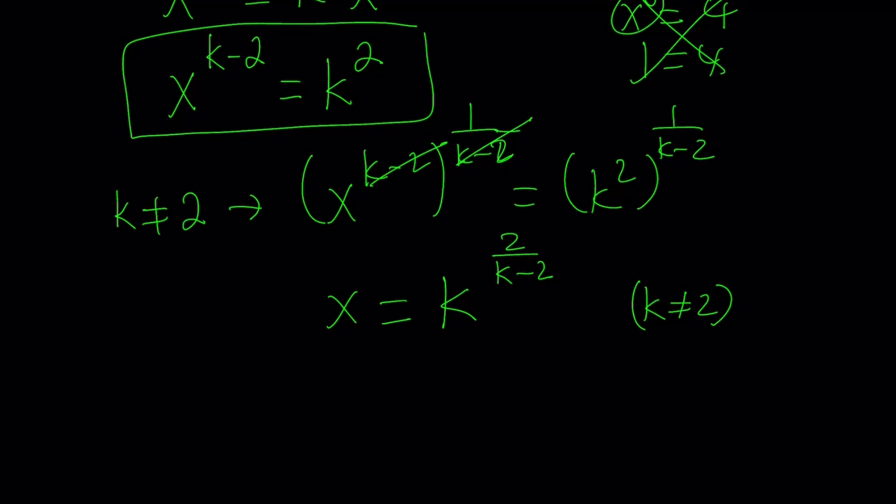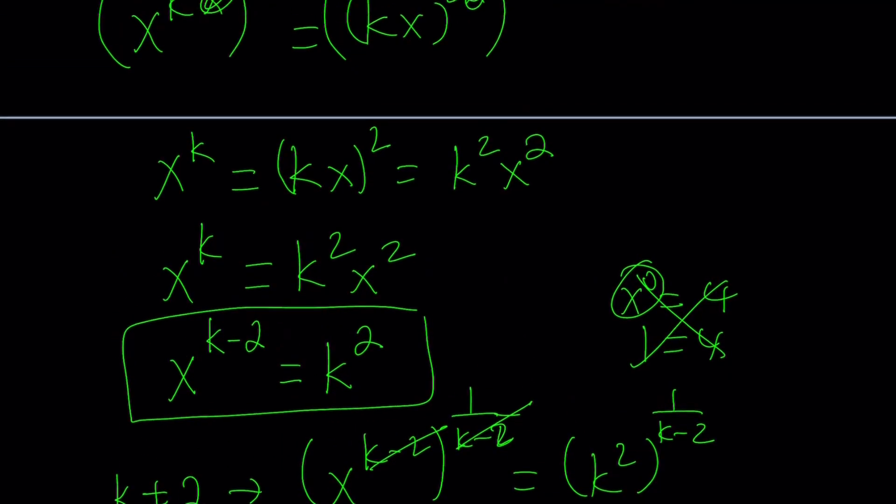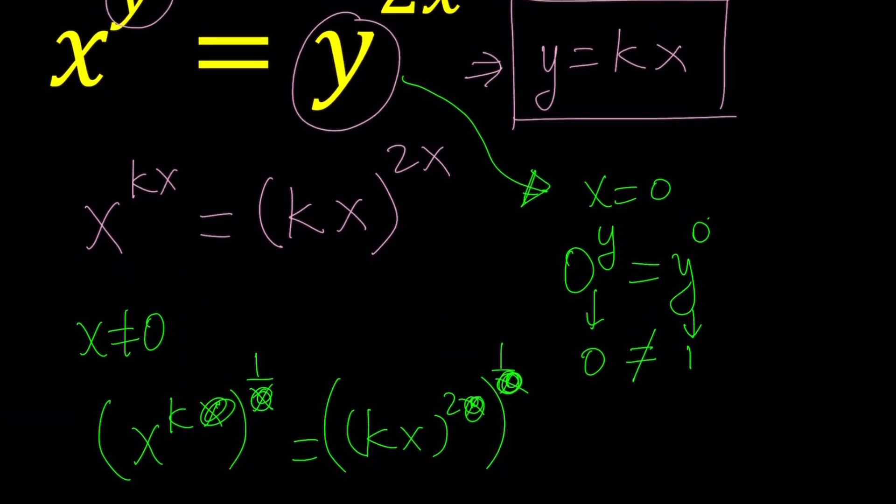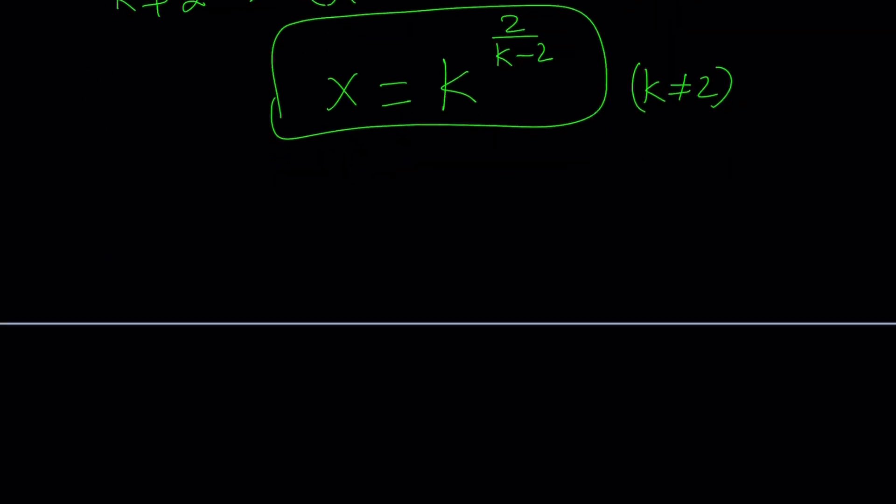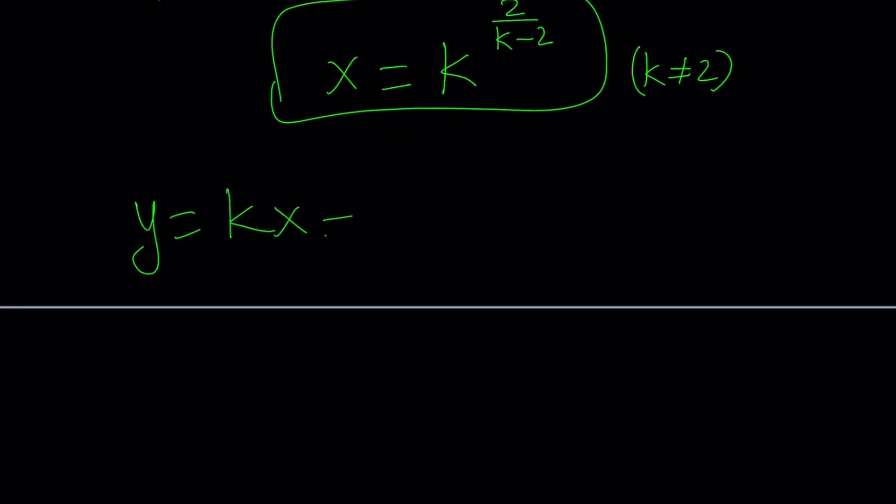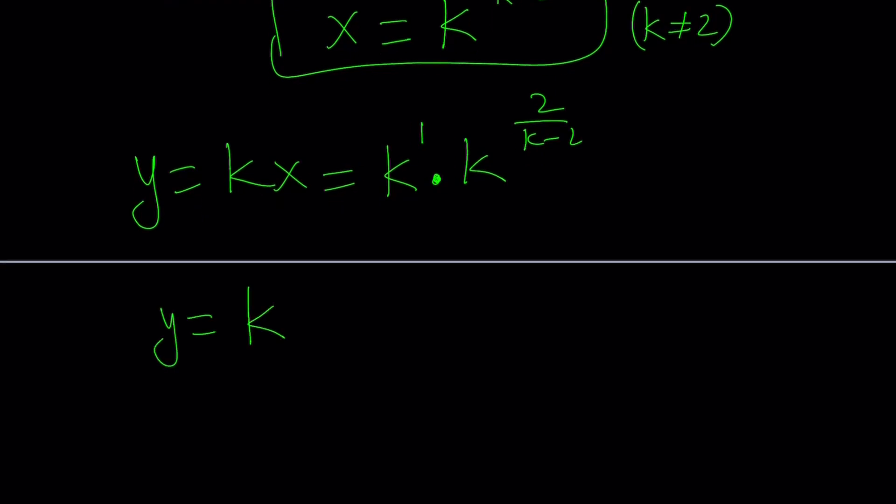But how do you solve for y? Well, we do have a relationship between x and y. Remember where we got the k from? We said initially, let's assume y equals kx. k is a real number. So y equals kx, which is k times k to the power two over k minus two, because that's what x equals. Now we can combine these two things, because k is k to the power one. So y can be written as k to the power one plus two over k minus two. And that can be simplified, because this is the same thing as k to the power k minus two plus two over k minus two. Negative two and positive two cancel out. And that gives us y equals k to the power k over k minus two.